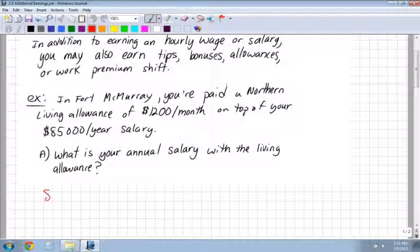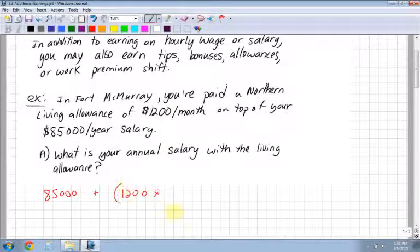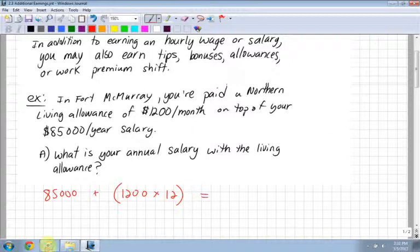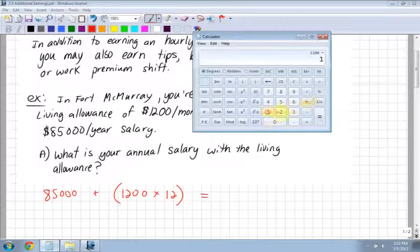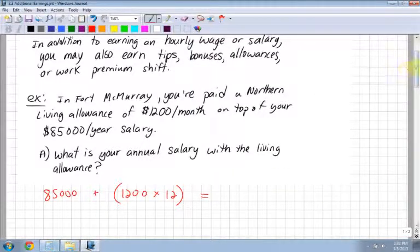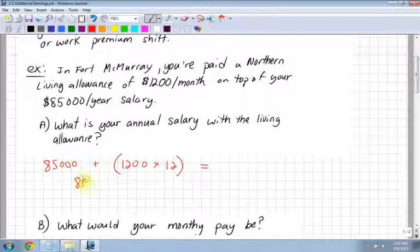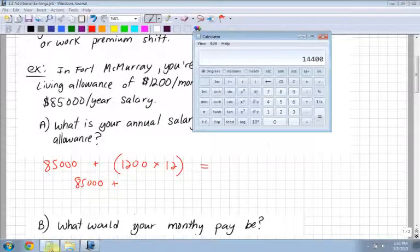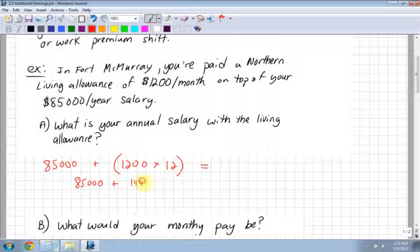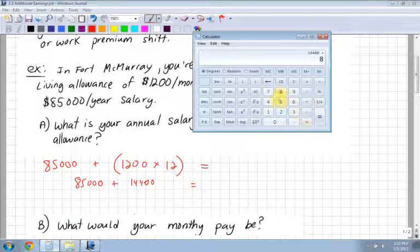I have $85,000 plus my $1,200 living allowance per month. I'm going to have to multiply that by how many months in a year? 12. So $1,200 times 12 for the year equals $14,400.